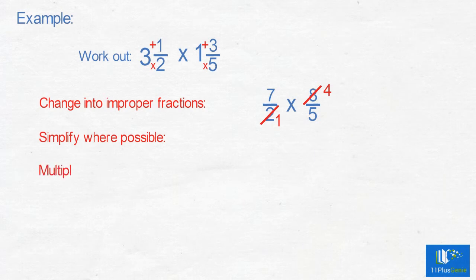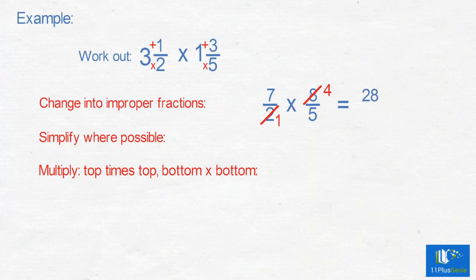Multiply top times top, bottom times bottom. 7 times 4 is 28 and 1 times 5 is 5.